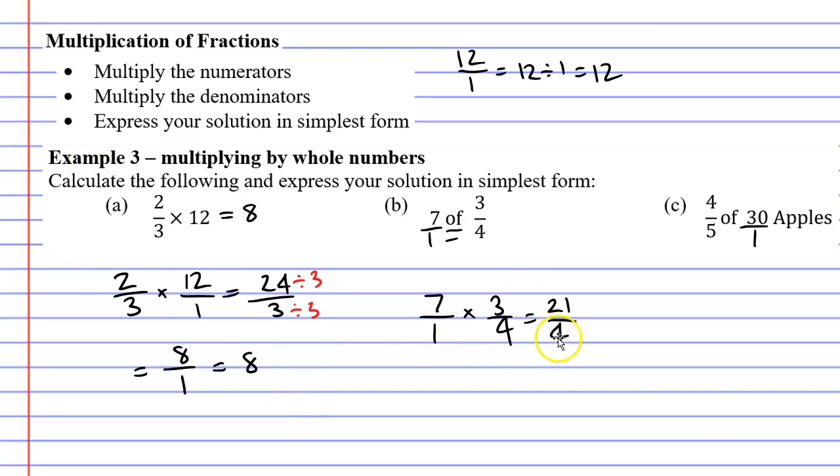So how many times does 4 fit into 21? Well 4 fits into 21 five times with a remainder of 1. Remembering that the denominator stays the same, the denominator was 4, so for our solution we keep it as 4. Our solution for question B is 5 and a quarter.